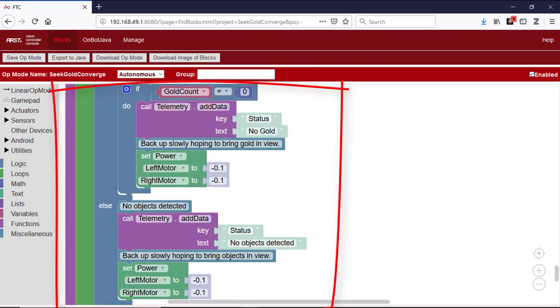If no objects are detected or objects are detected but none of them are gold, it backs the robot up slowly in hopes of bringing minerals into view.